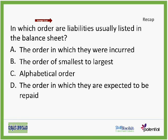In which order are liabilities usually listed in the balance sheet? On the asset side, we start from cash, going down to near-cash items, to investments, to accounts receivable or inventory. On the liability side, we always start with the shorter in terms of payment — which ones we have to pay earlier. The order in which they are incurred has nothing to do with the balance sheet. Smallest to largest is out of scope, and alphabetical order has nothing to do with accounting.